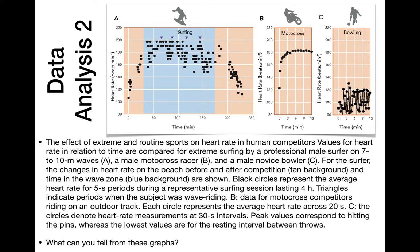You'll notice something interesting in bowling — the peaks are from hitting the pins. The lowest values are for resting intervals. So if you get a strike when you're bowling, your heart rate will go up from the excitement of that. Take a minute and if you haven't already seen all that yourself, practice looking at these graphs and read the paragraph describing what the symbols mean — practice interpreting what it means, because it's going to show up on your test. Not these graphs, but other types of data to analyze relating to homeostasis and physiology.